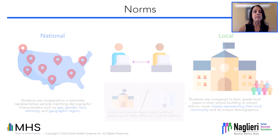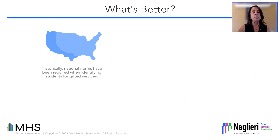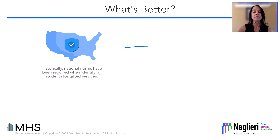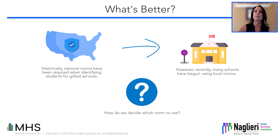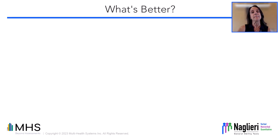For many years, and in many states, we were required to use national norms to determine identification for gifted services. More recently, many schools have begun using local norms. The question remains how to determine whether local or national norms are preferable to use. To answer this question, we must think about the purpose of identification.